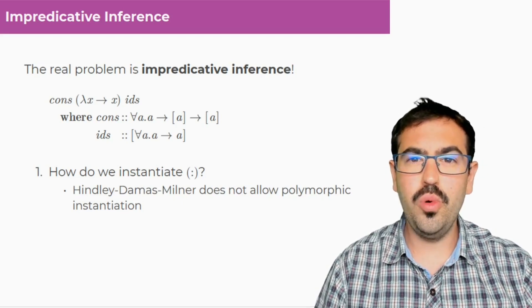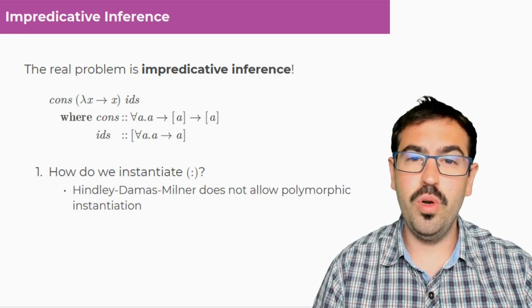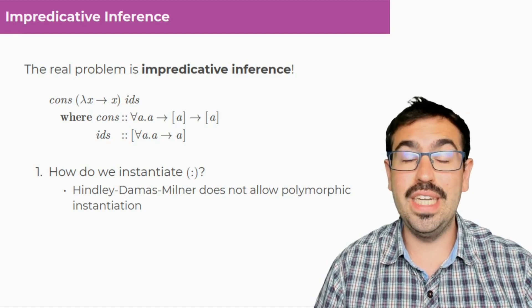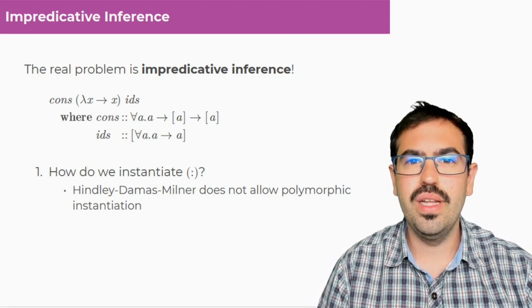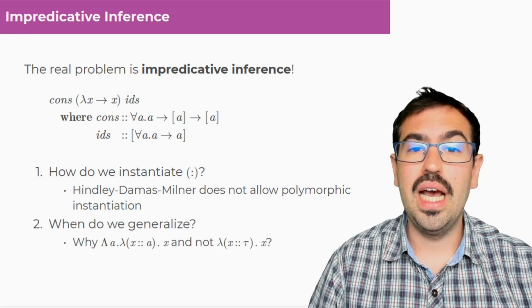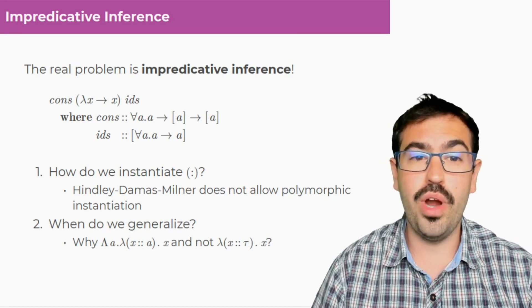But there are several questions. First of all, how do we instantiate the cons? Hindley-Damas-Milner, for example, which is one of the best known inference algorithms, does not allow polymorphic instantiation at all. The second question is how do we choose to generalize? How do we know that we have to have a big lambda excite at the point we need it and not somewhere else?